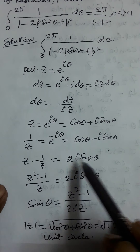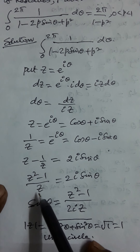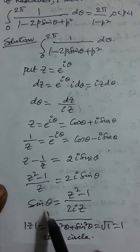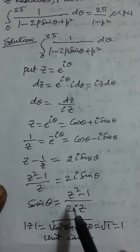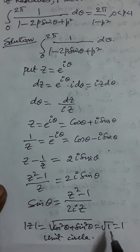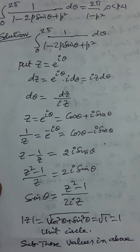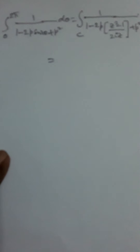z = e^(iθ) = cosθ + i sinθ by Euler's formula. So 1/z = e^(−iθ) = cosθ − i sinθ. Subtracting: z − 1/z = 2i sinθ, giving sinθ = (z² − 1)/(2iz). Also, |z| = √(cos²θ + sin²θ) = 1, so this is the unit circle.